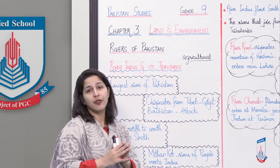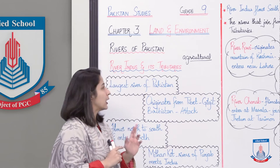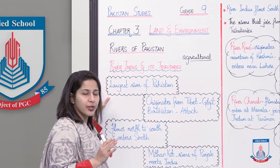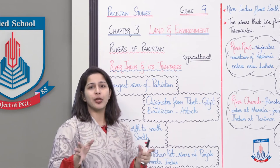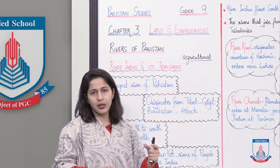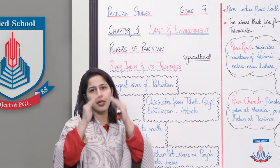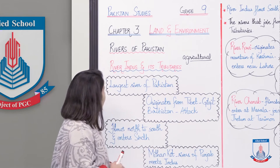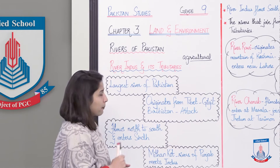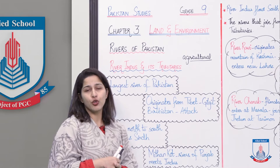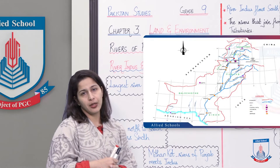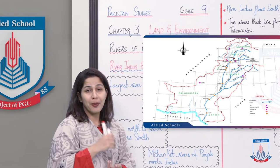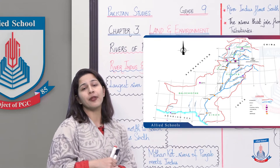The most important and major river of Pakistan is the River Indus. We are going to study the location and importance of the River Indus and its tributaries. Tributaries are the branches of a main river — rivers that join the main river from the right or left side. River Indus is the largest river of Pakistan. Looking at the map, you can see how this river runs from the north throughout Pakistan, passing through Punjab and Sindh, ending up in the Arabian Sea.